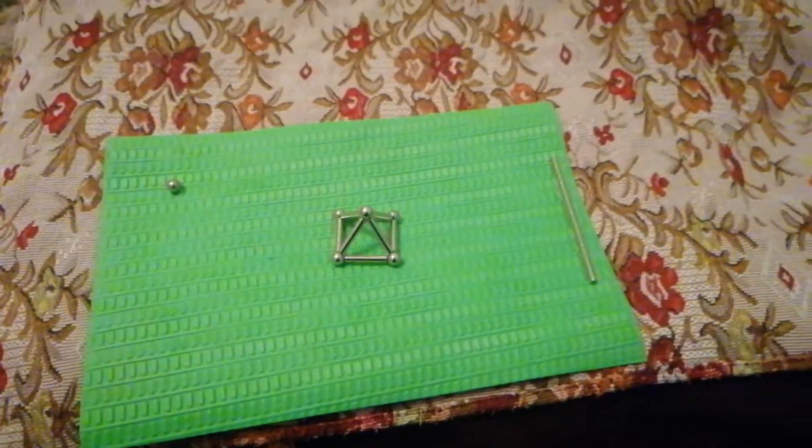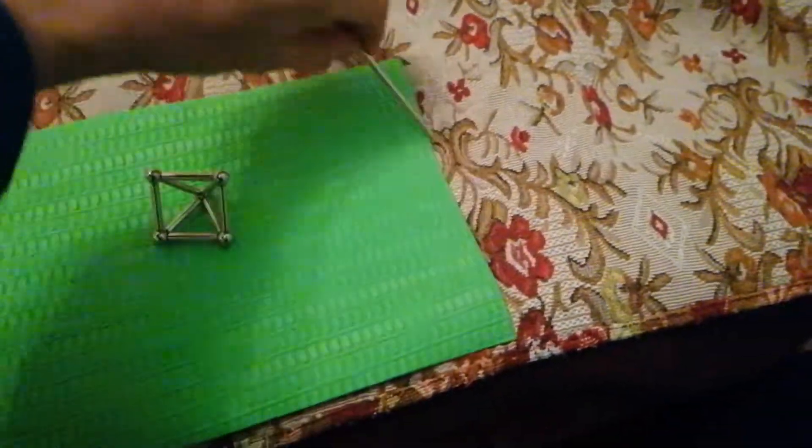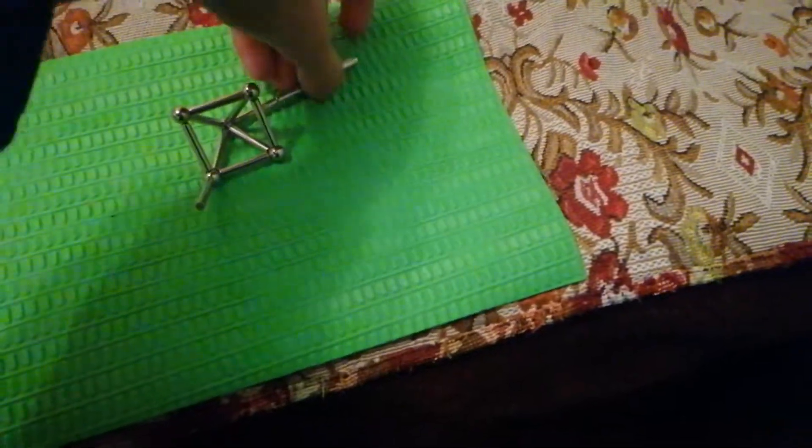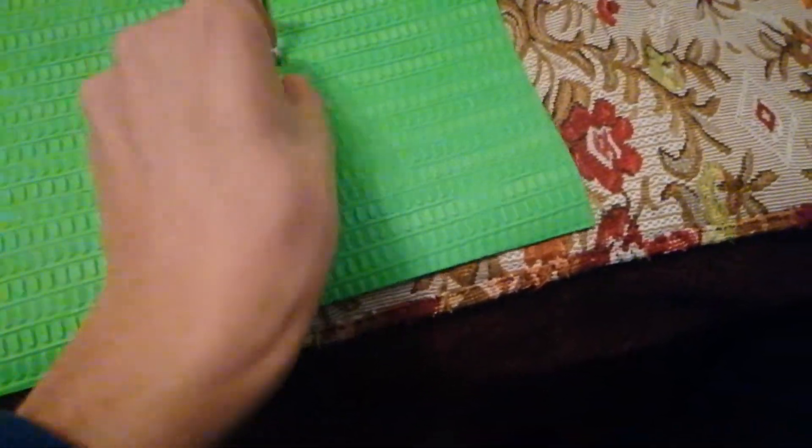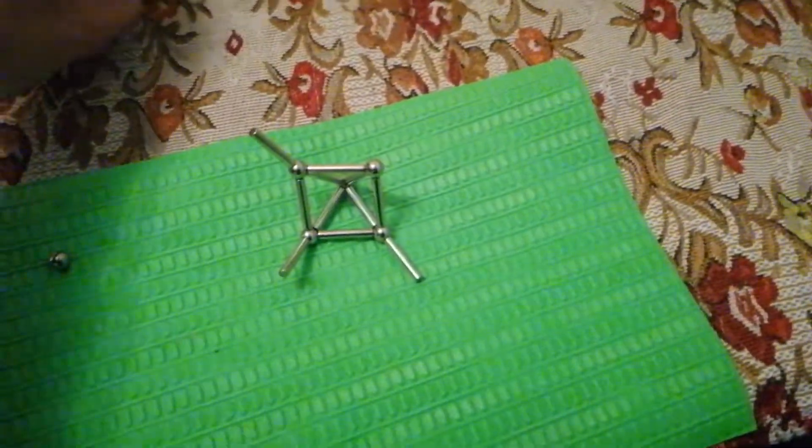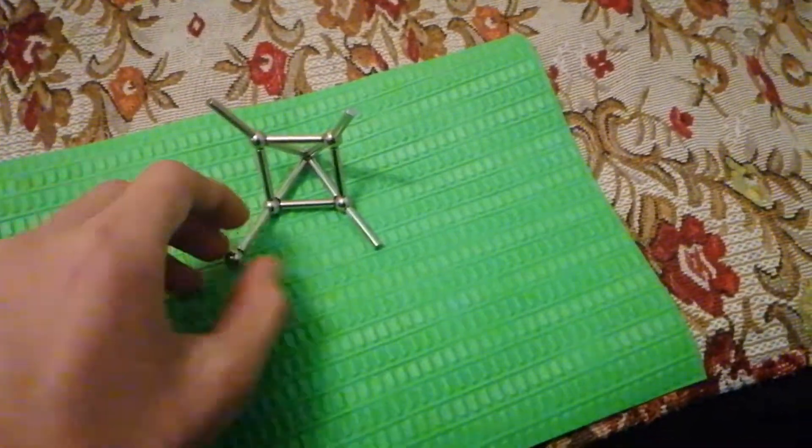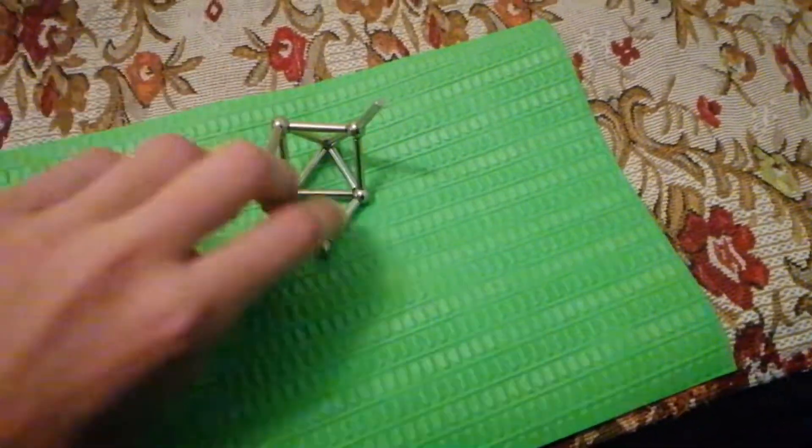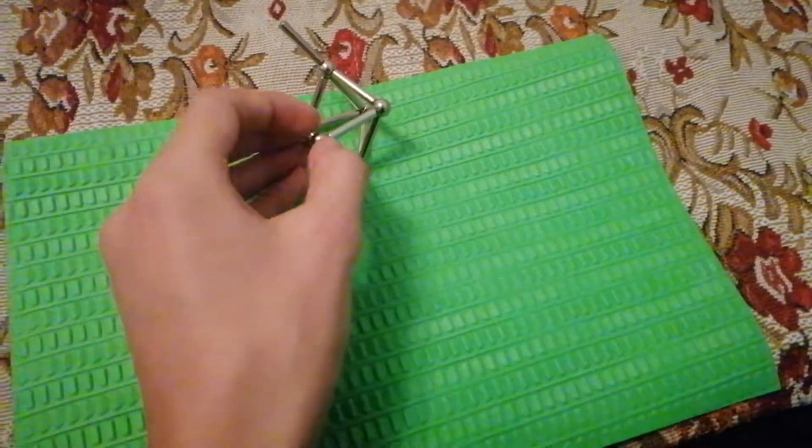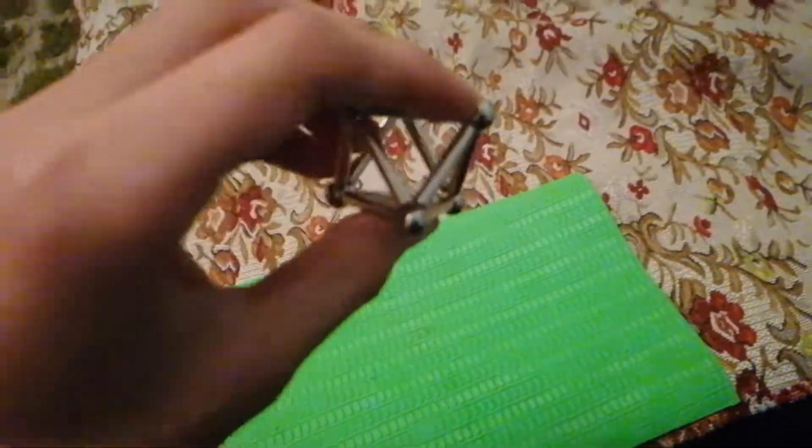And finally step 3, repeat step 2 but on the other side. So we will make another pyramid but on the opposite side this time. Like this. Then one bead and connect. And now you finally have one octahedron.